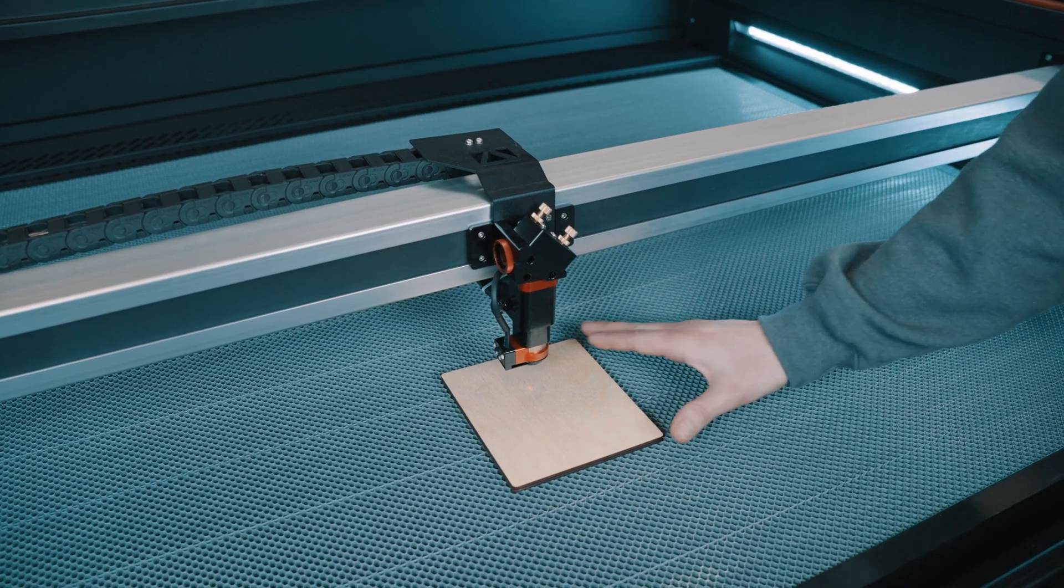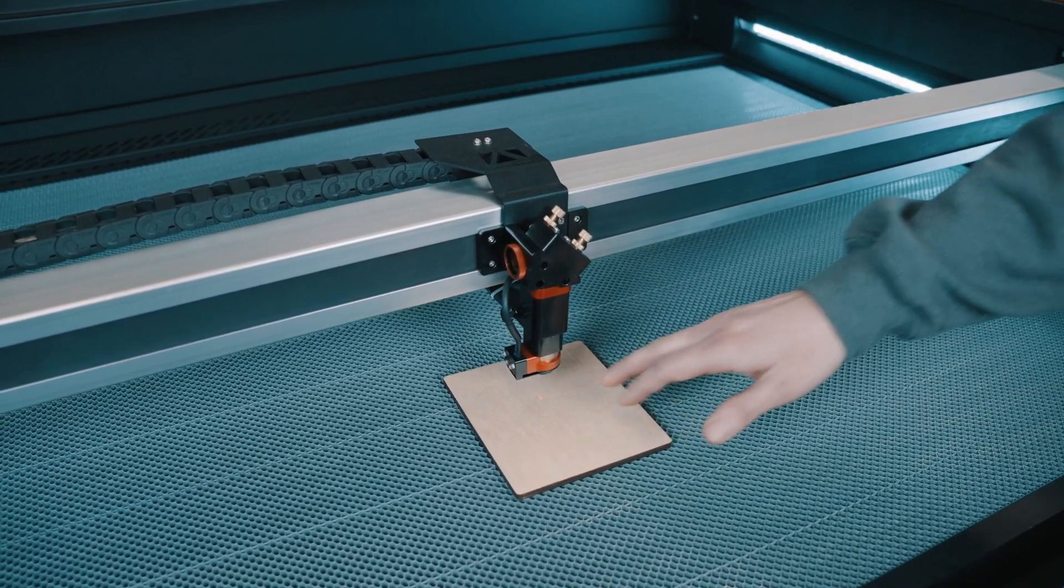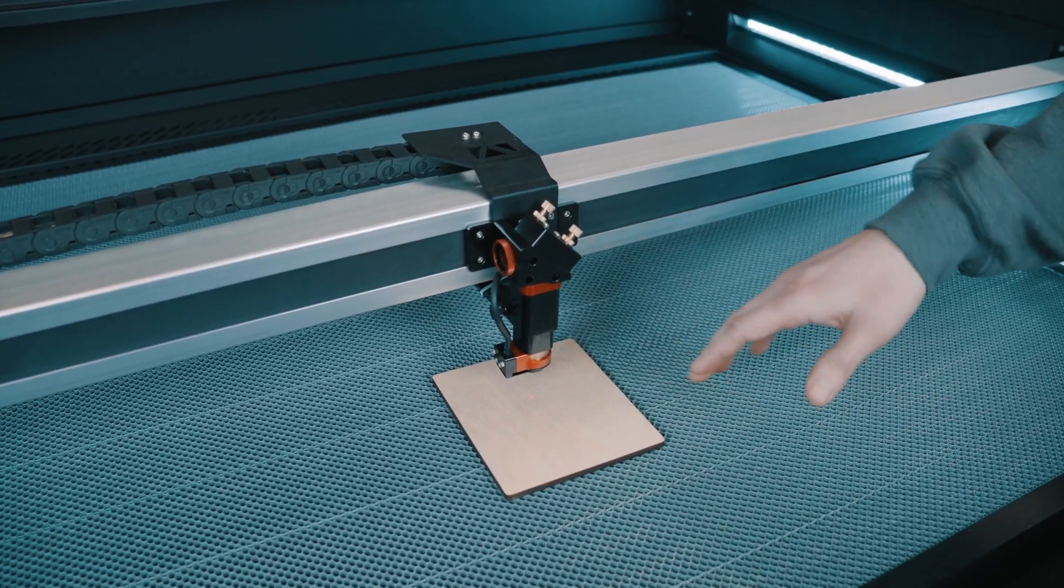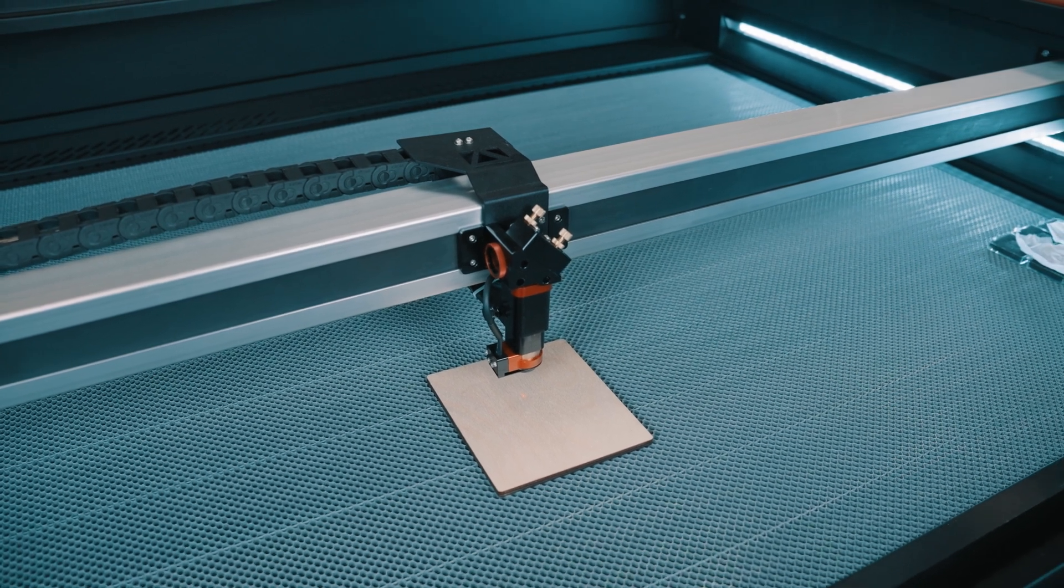We're going to start off here by finding a scrap piece of material, quarter inch plywood is really good, and then we're going to autofocus off of that material.